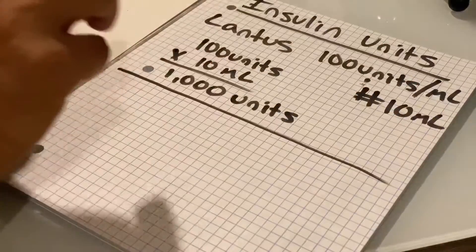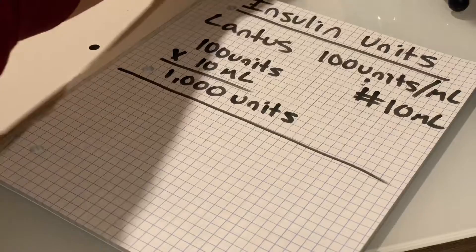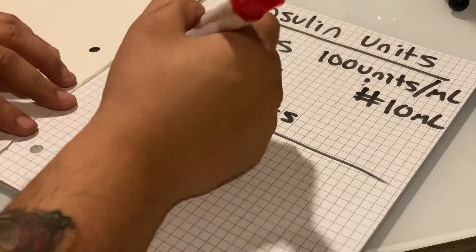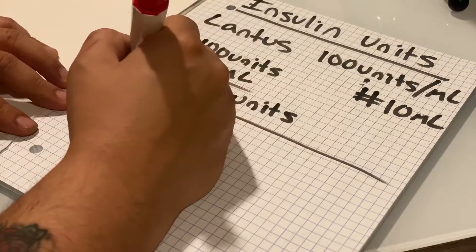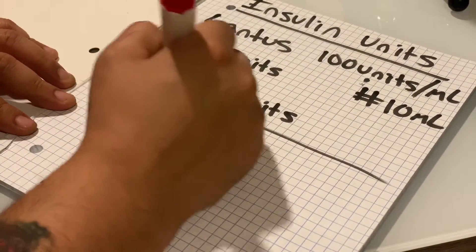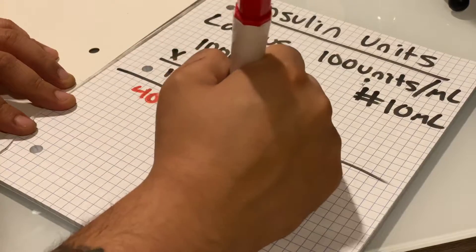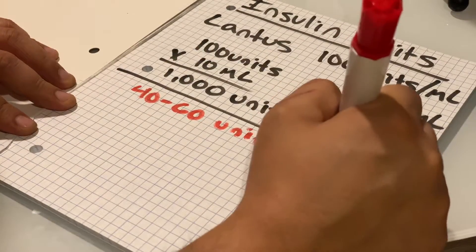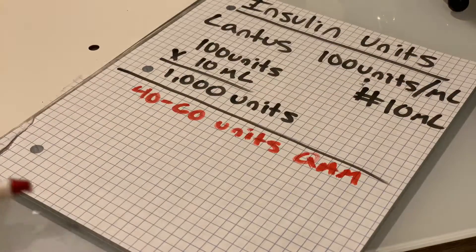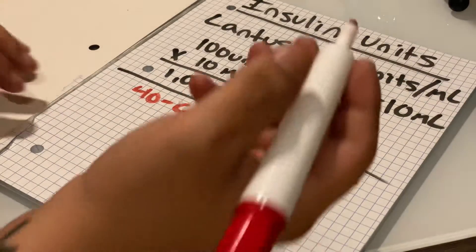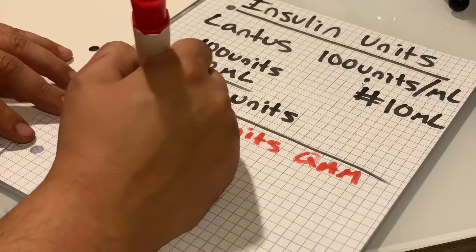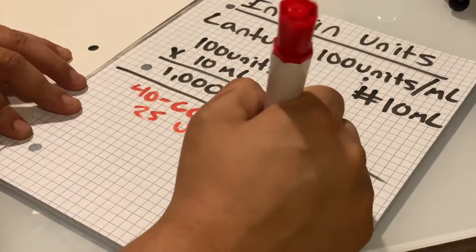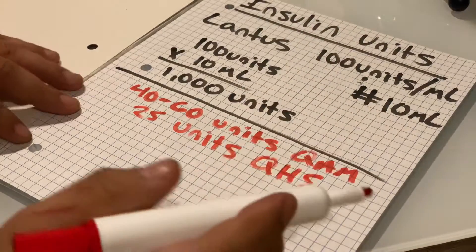Now, we take a basic prescription, per se. Say the doctor is saying to inject 40 to 60 units daily in the morning, QAM. And let's say he wants to do another 25 units at bedtime, QHS.